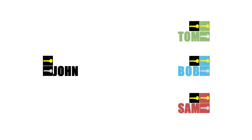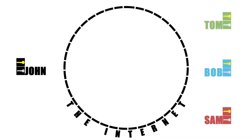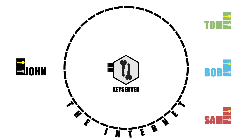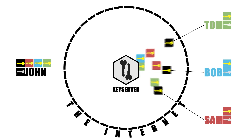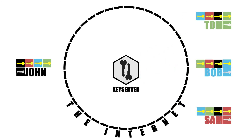On the internet, this is done with what is called a key server — a special online directory of all the public keys. Instead of sending to each contact, John can send his public key to the key server. Likewise, each of these contacts can send their public keys to the key server. Now, when John wants to communicate with those contacts, he just downloads their public keys from the key server. And likewise, each of those contacts can download everyone else's public key, including John's, from the key server. Now any one of these parties can send encrypted messages to any other.